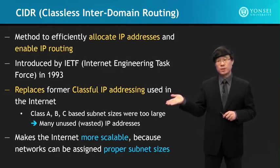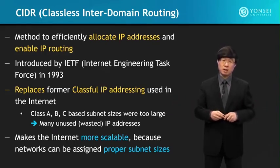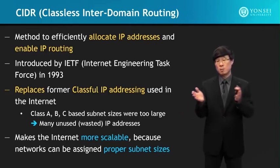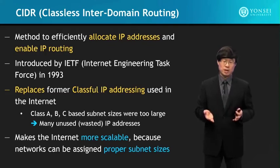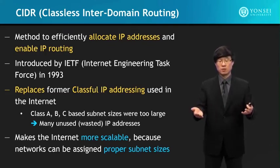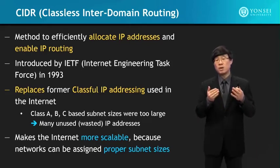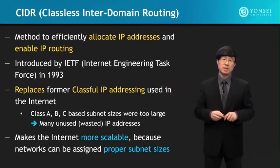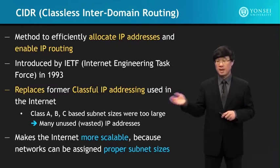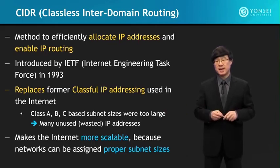CIDR was introduced because typical class A, B, C type classes created subnets that were excessively large — larger than the number of IP addresses needed, resulting in unused, reserved, and wasted IP addresses. A more efficient subnetting and routing notation was needed, which is why CIDR was created. It makes the Internet more scalable because networks can be assigned proper subnet sizes.